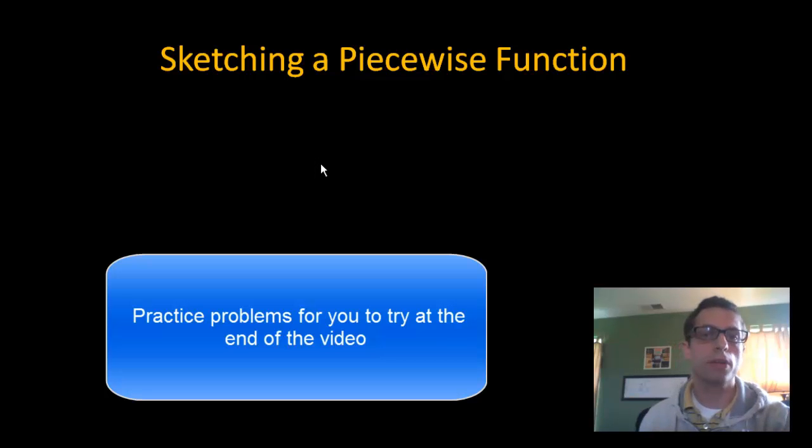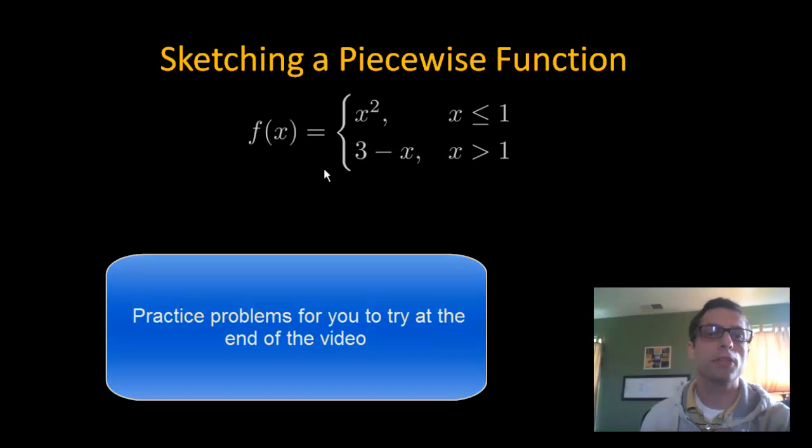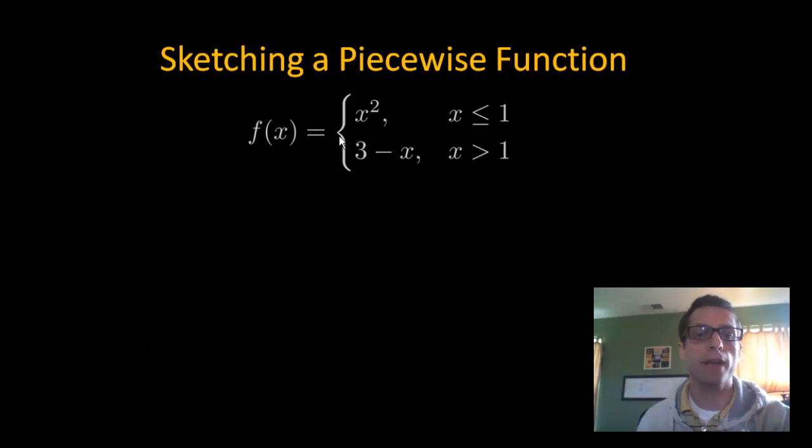Hello, my name is Brian, and today we're going to sketch two piecewise defined functions. Let's go ahead and take a look at our first example. We have two pieces: it's x squared when x is less than or equal to 1, and 3 minus x when x is greater than 1.